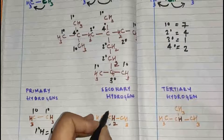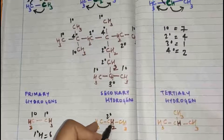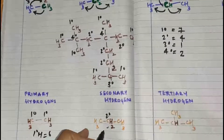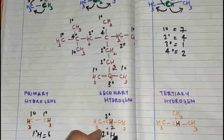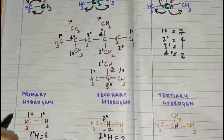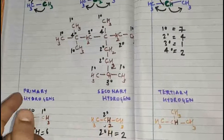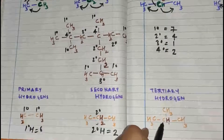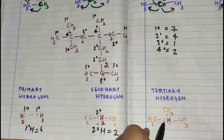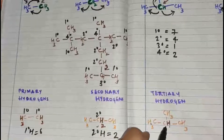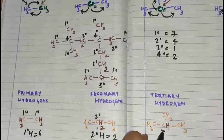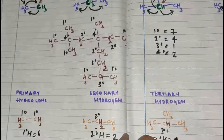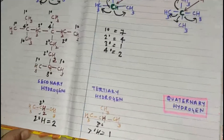Secondary hydrogen is the same concept: this is our secondary carbon atom, and the hydrogens attached to a secondary carbon atom are called secondary hydrogens. So secondary hydrogens equals two, because I have got two hydrogens here. Tertiary hydrogen is the hydrogen attached to a tertiary carbon atom. This is a tertiary carbon atom because it is attached to one, two, and three carbon atoms. How many tertiary hydrogens do we have? We have only one tertiary hydrogen here.